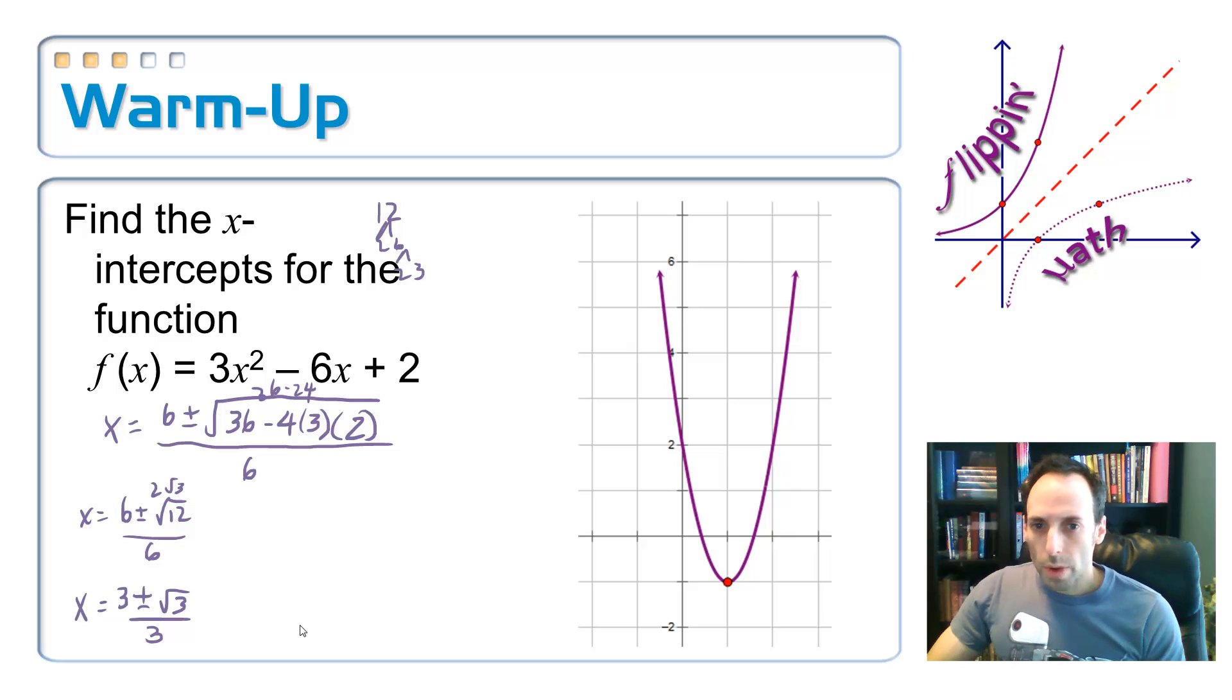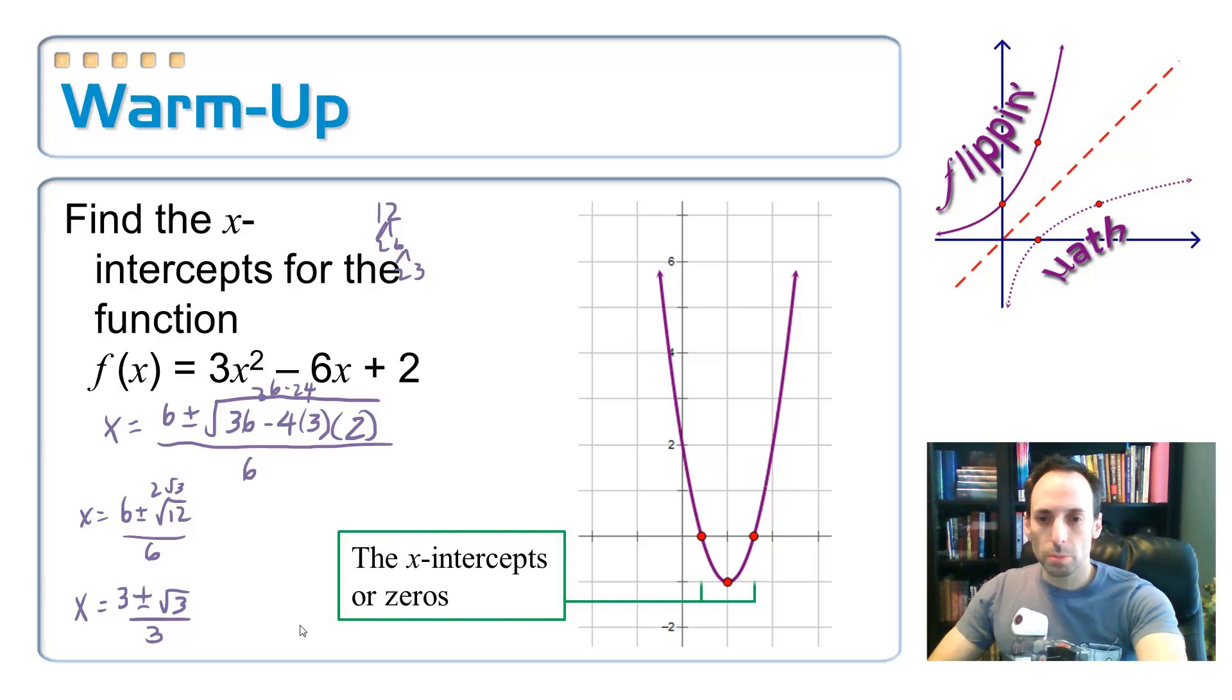Yeah, totally irrational ones. So, here are those two points. Those are my two x-intercepts, or zeros, if you will.